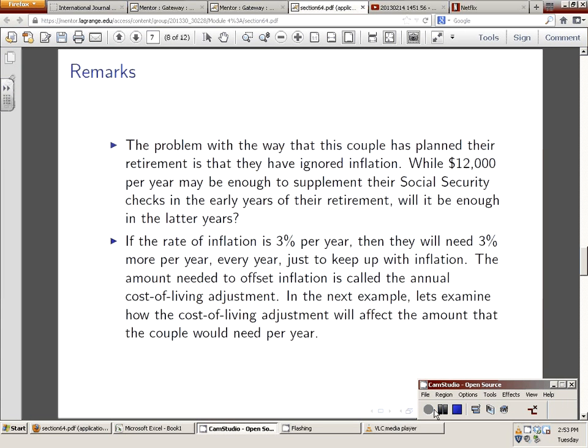The problem with handling investment for retirement this way is that the couple that plan their retirement has ignored inflation. $12,000 a year may be enough to offset or supplement their Social Security checks in the early years of their retirement. But the question remains, will it be enough in the later years? Now, remember, rate of inflation is typically 3% per year.